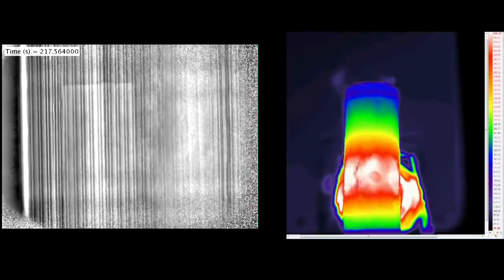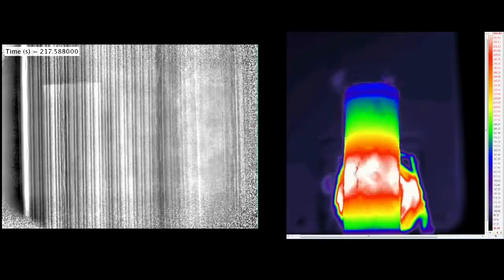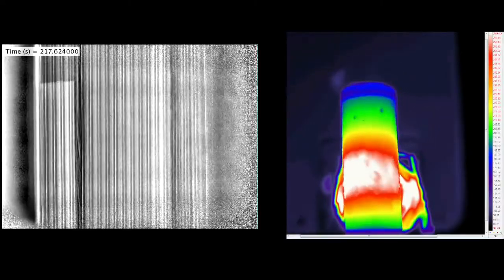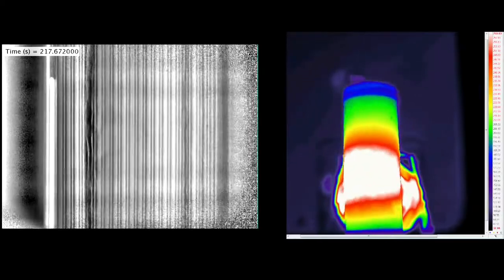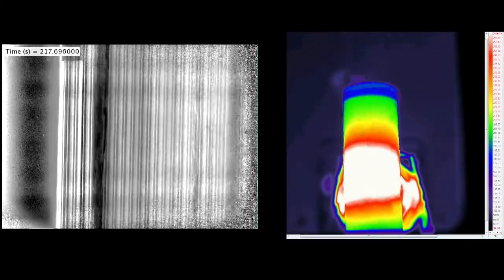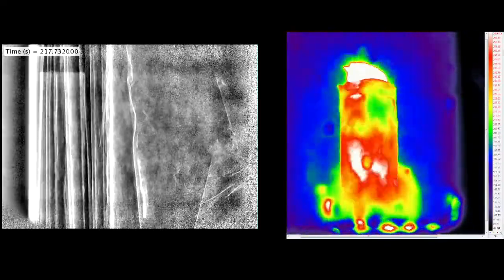Thermal runaway is a process in which, at a critical temperature, the materials inside these batteries start to break down exothermically. They generate a lot of heat while they break down, and when heat cannot escape as fast as it's being generated, this is a runaway reaction that cannot be stopped.